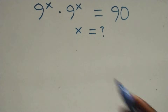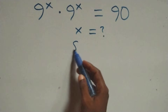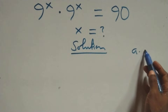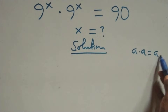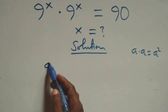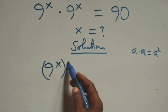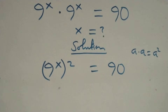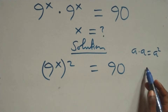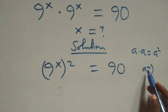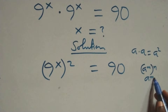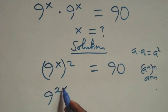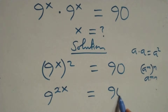Hello, welcome. Here we solve a nice equation. We have a times a which is the same as a squared. This can be written as 9 raised to power x, all squared, equals 90. This follows when we have a raised to power n, raised to power n, which is the same as a raised to power mn. So we have 9 raised to power 2x equals 90.